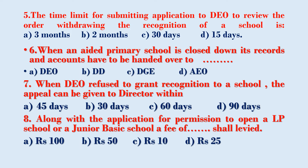The time limit for submitting an application to the DEO to review the order withdrawing the recognition of a school is: Option A – three months, Option B – two months, Option C – thirty days, Option D – fifteen days. When an aided primary school is closed down, its records and accounts have to be handed over to: Option A – DEO, Option B – DD, Option C – DGE, Option D – AEO.